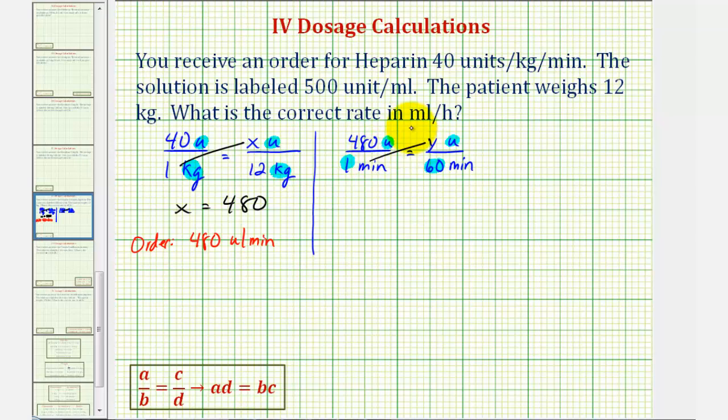We have one times y, which is y, must equal 480 times 60, which is 28,800. Which means the order is really for 28,800 units per hour.